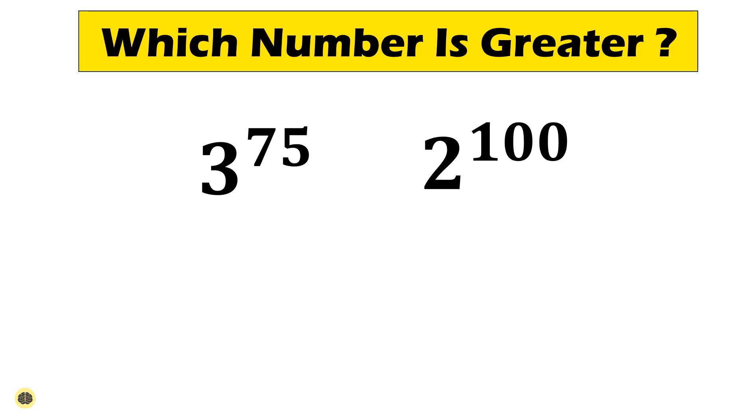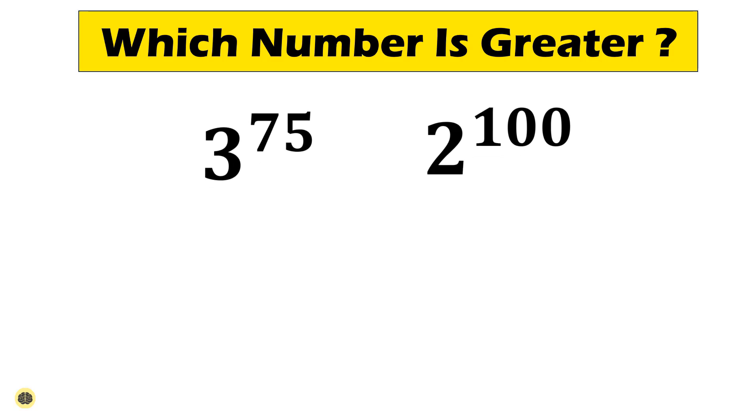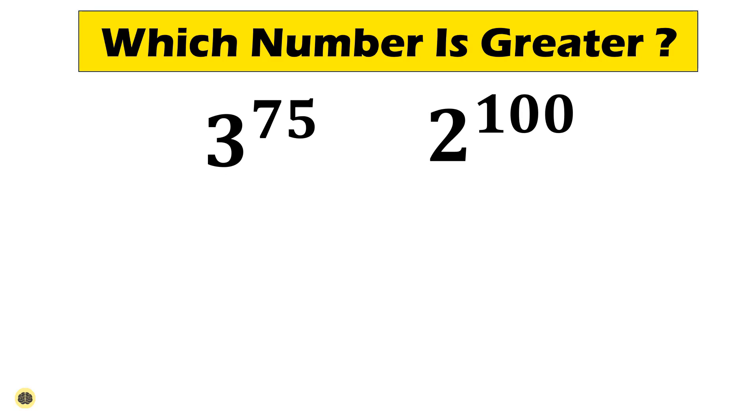Let me explain the solution now. To begin our exploration, let's first simplify these expressions for a clearer comparison. We can express 3 power 75 as 3 power (3 times 25) and 2 power 100 as 2 power (4 times 25). This step highlights the common factor of 25 in both exponents, setting the stage for a more straightforward comparison.